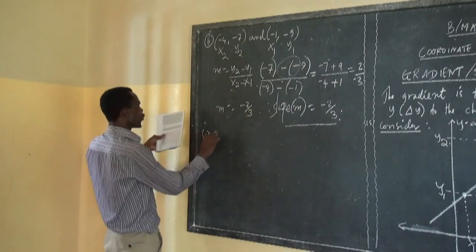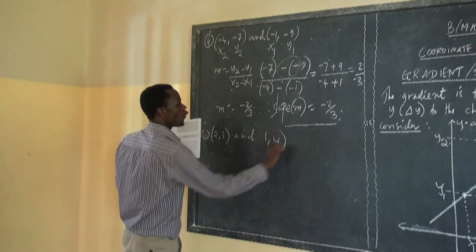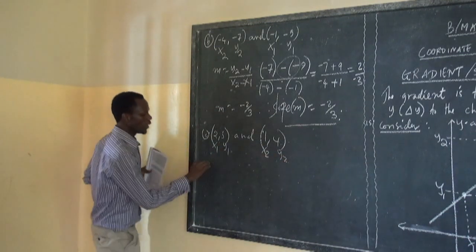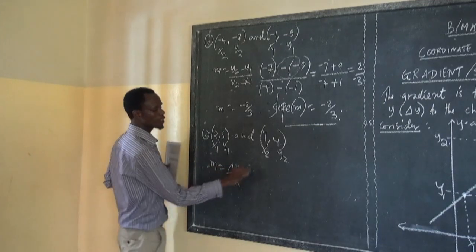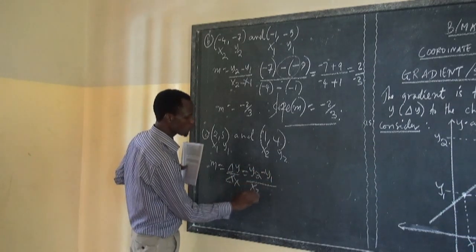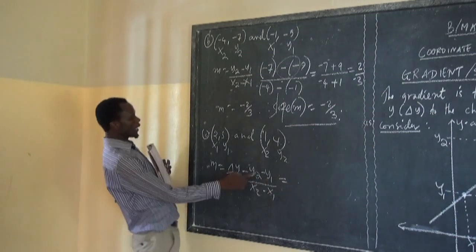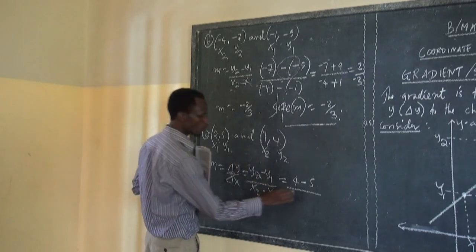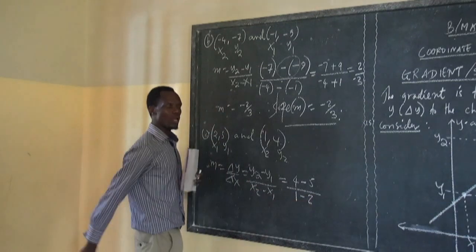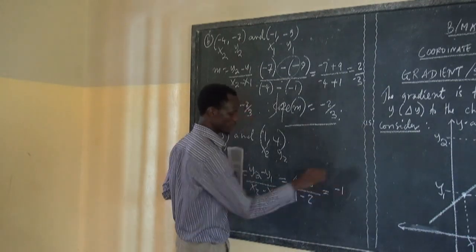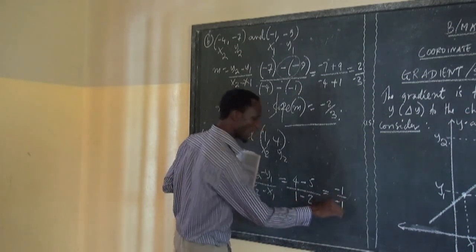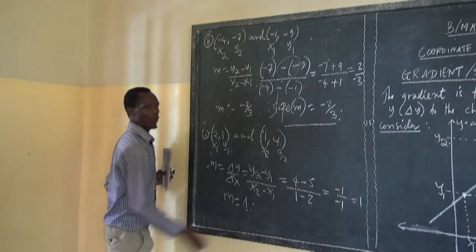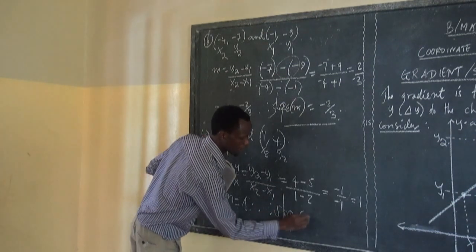For part C: we have (2, 5) and (1, 4). Let x1 = 2, y1 = 5, x2 = 1, y2 = 4. Slope = (y2 − y1) / (x2 − x1) = (4 − 5) / (1 − 2) = (−1) / (−1) = positive 1. Therefore, slope m is equal to 1.